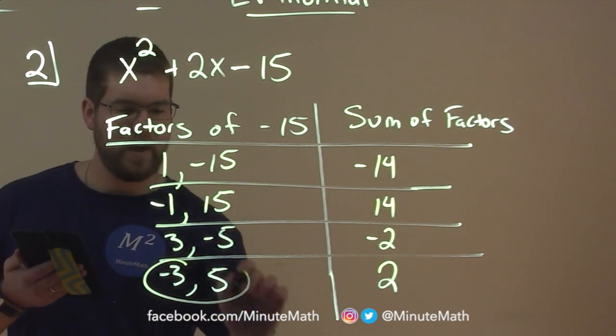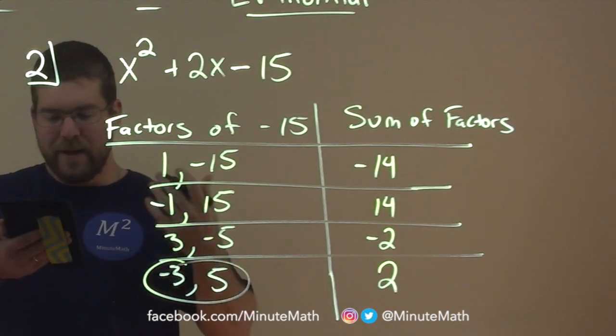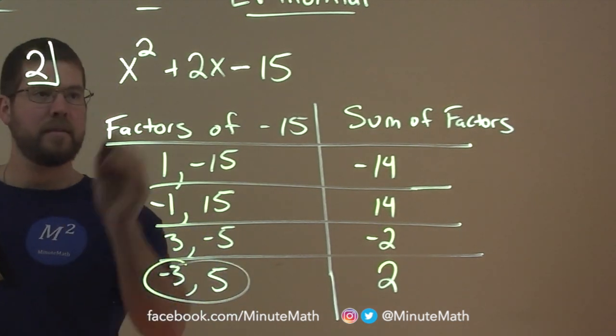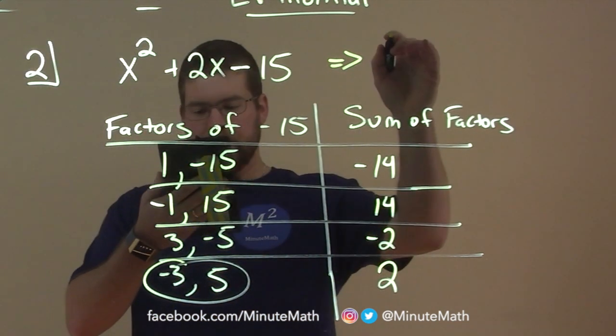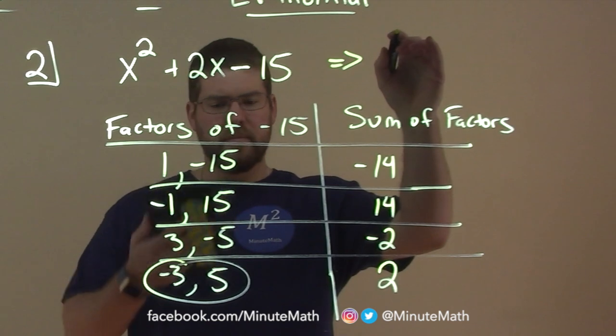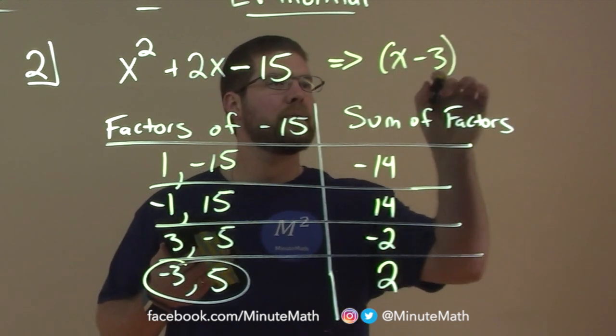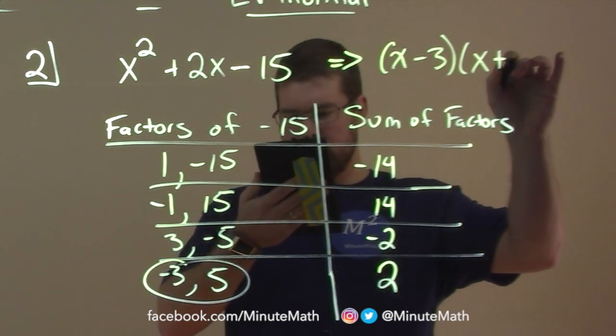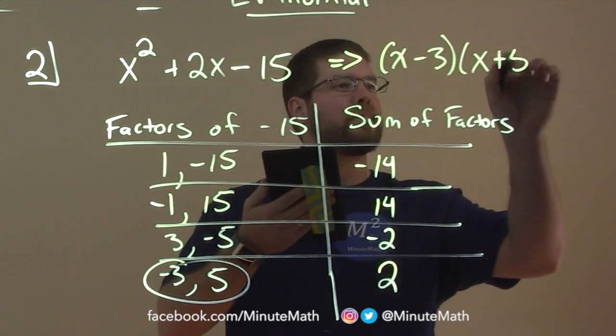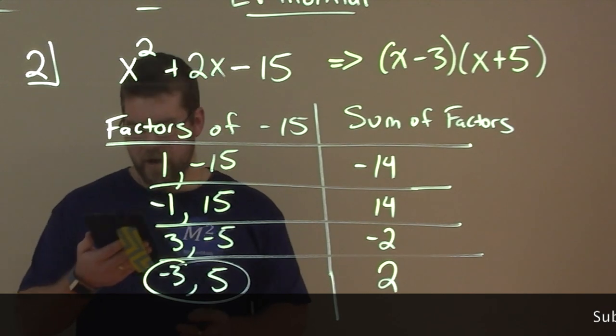So here is our pair that we're looking for. Therefore we can rewrite and factor this, let's do it up here, as x minus 3, or plus negative 3, and x plus 5. And there we have our factors.